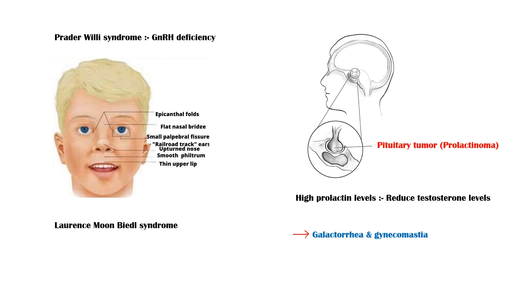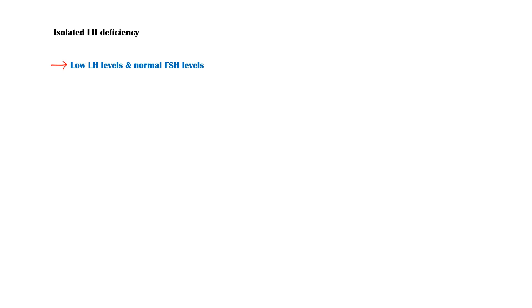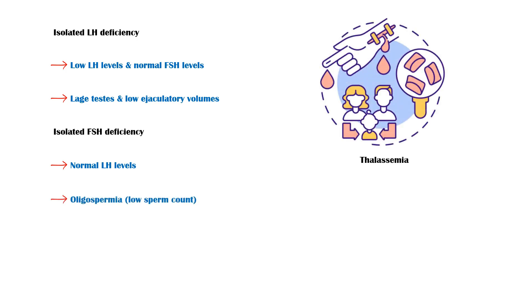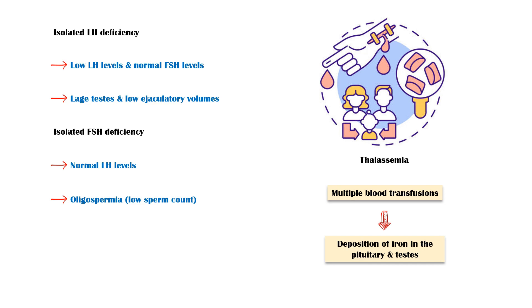These patients will also have galactorrhea and gynecomastia, or abnormal breast development. Isolated LH deficiency is a condition characterized by low LH levels and normal FSH levels. These individuals will have large testis and low ejaculatory volumes. In isolated FSH deficiency, FSH level is low and they have low sperm counts. Individuals with thalassemia will also have infertility because they undergo multiple blood transfusions, which result in deposition of iron in the pituitary and testis. Ultimately, built-up iron will cause tissue damage and infertility.